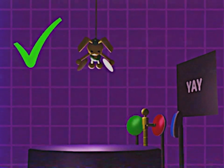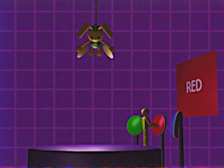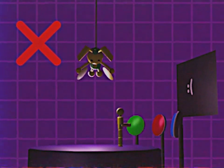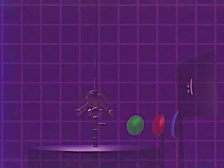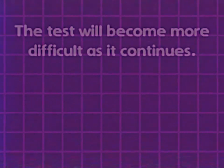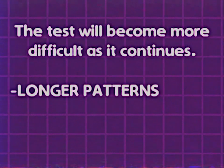When you input a pattern incorrectly, Bunzo will lower towards you faster. If Bunzo reaches you, your test is over. The test will become more difficult as it continues with longer patterns in quicker succession.